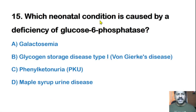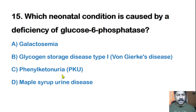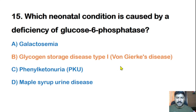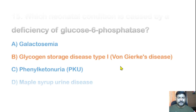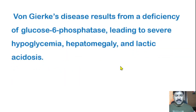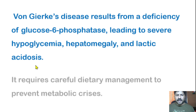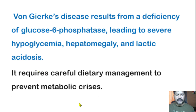Fifteenth question: Which neonatal condition is caused by a deficiency of glucose-6-phosphatase? Options: galactosemia, glycogen storage disease type 1 (von Gierke's disease), phenylketonuria, or maple syrup urine disease. The correct answer is glycogen storage disease type 1, or von Gierke's disease. It results from a deficiency of glucose-6-phosphatase, leading to severe hypoglycemia, hepatomegaly, and lactic acidosis, requiring careful dietary management to prevent metabolic crisis.